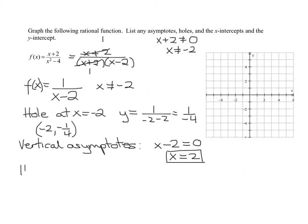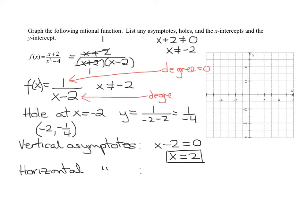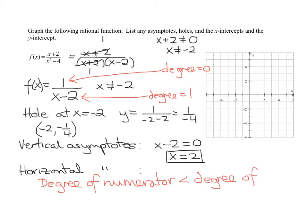Now let's look at horizontal asymptotes. It depends on the degree of the numerator and denominator. The degree of the numerator is 0, and the degree of the denominator is 1. Since the degree of the numerator is less than the degree of the denominator, the horizontal asymptote is always y equals 0. And if a graph has a horizontal asymptote, it cannot have a slant asymptote.